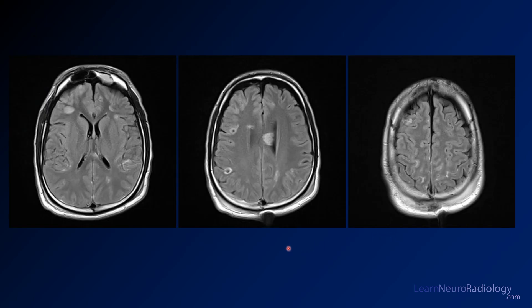If you take a look at the MR, what you're going to see on FLAIR is some areas of edema with central darkness or central susceptibility. You see some hyperintensity within a sulcus, which is probably some subarachnoid blood. Here you see a lesion along the body of the corpus callosum.